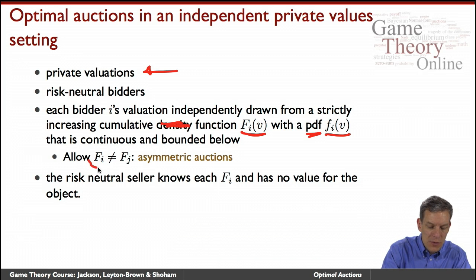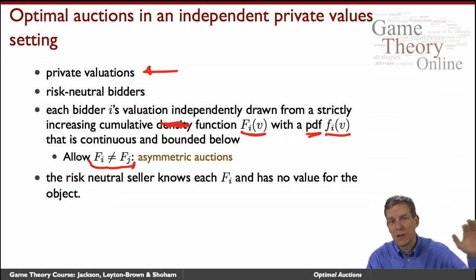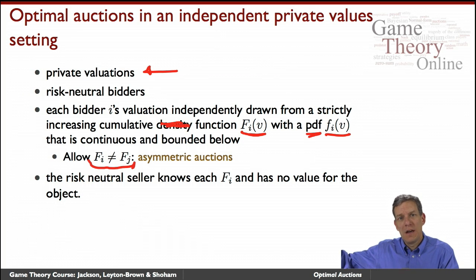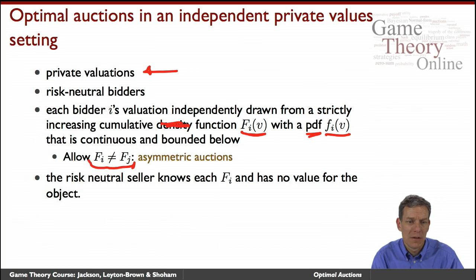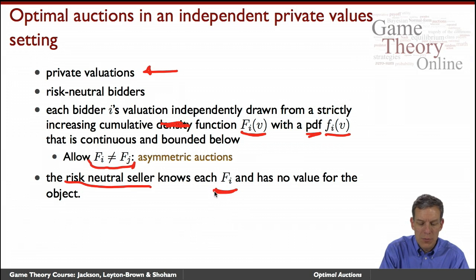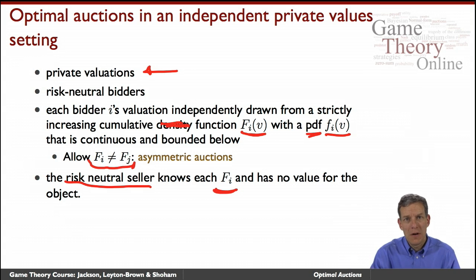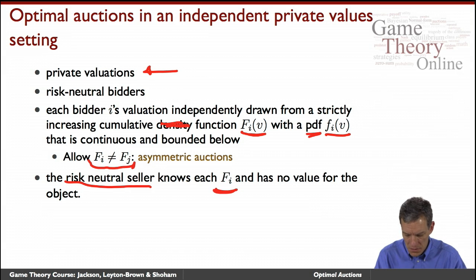We're going to allow for asymmetries among individuals — one bidder can have one distribution and another bidder a different distribution. Some bidders might have deep pockets and high values; others might be more thrifty with lower values. The risk-neutral seller knows the distributions but has no value for the object — zero value. The seller knows the distributions but does not know the actual realized values: they know the range and relative probabilities but not the precise values.